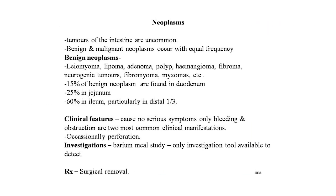Next point is neoplasm. Tumors of the small intestine are uncommon; colonic neoplasms occur 40 times as frequently. Benign and malignant neoplasms occur with equal frequency. Benign neoplasms include leiomyoma, lipoma, adenoma, polyp, hemangioma, fibroma, neurogenic tumors, fibromyoma, and myxoma. 50% of benign neoplasms are found in the duodenum, 25% in the jejunum, and 60% in the ileum, particularly in the distal one-third. Clinical features: they cause no serious symptoms; only bleeding and obstruction are the two most common manifestations; occasionally perforation occurs. Treatment is surgical removal.